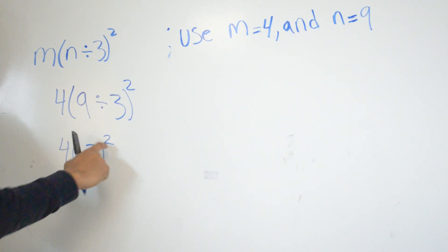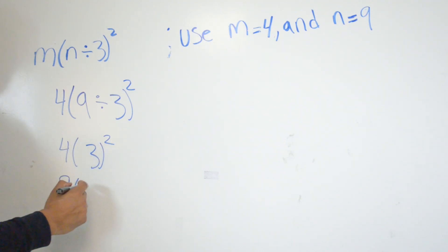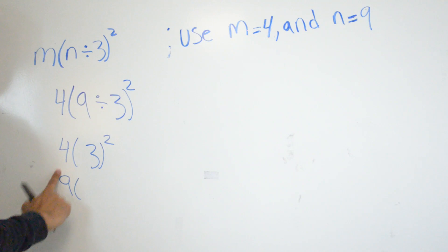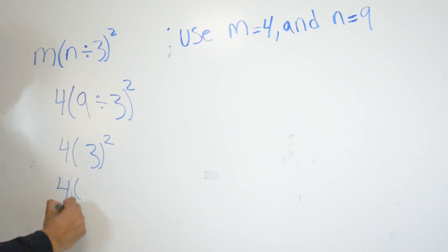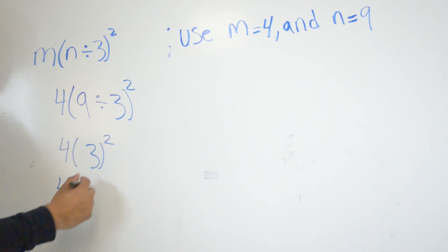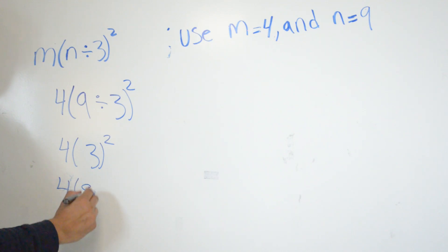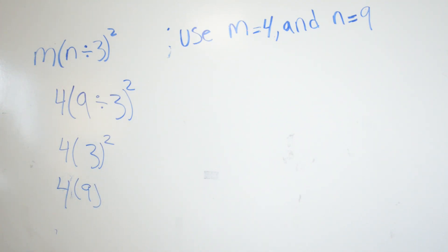3 to the second power is going to give us 9. Then we have the 4 out front, so 3 to the second power is 9, and 9 times 4 is going to give us 36.